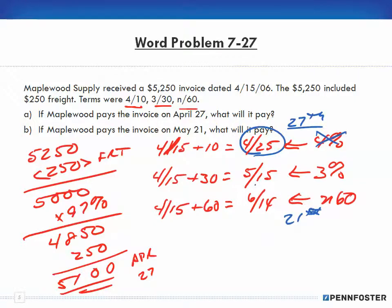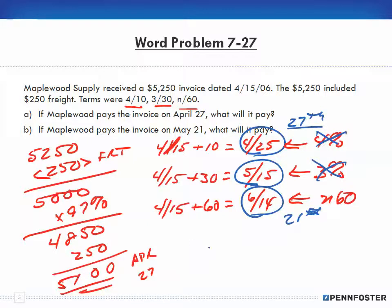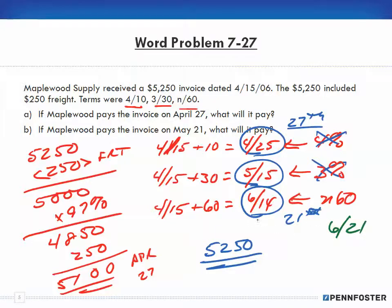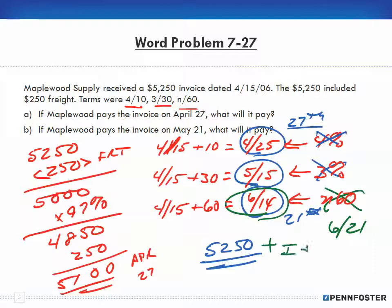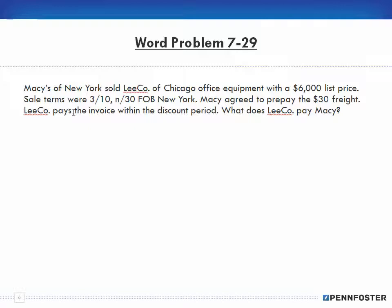For Part B, paying on May 21st: that falls outside of the 3% discount period but is still within the 60 days, so Maplewood pays the full invoice amount of $5,250. As a side note, if they had paid on June 21st, that would fall outside the net 60 period entirely, and they would end up paying the full $5,250 plus interest and penalties.